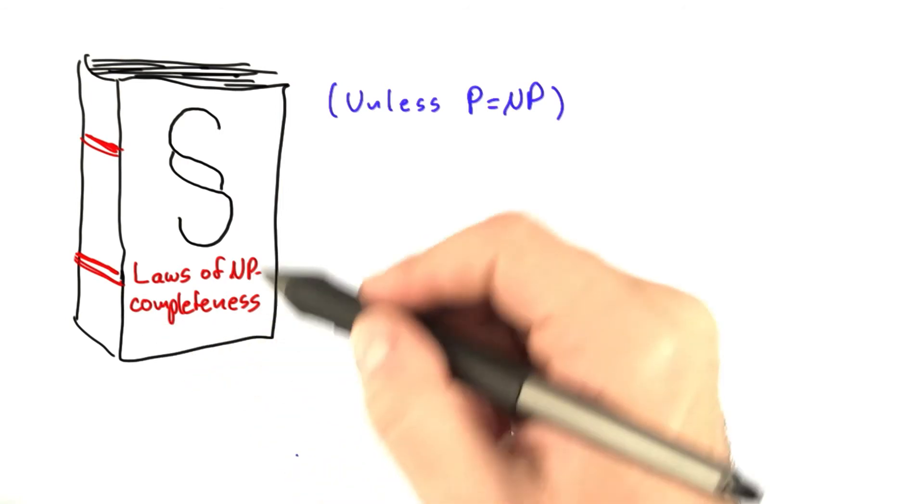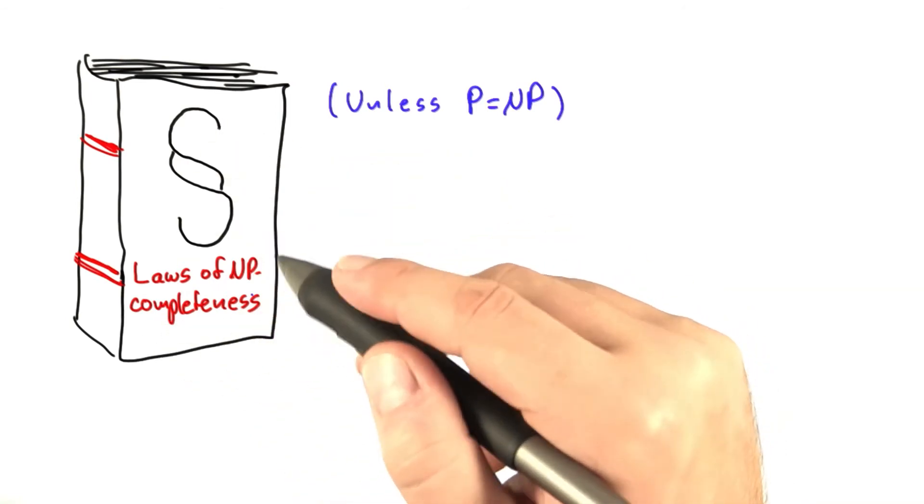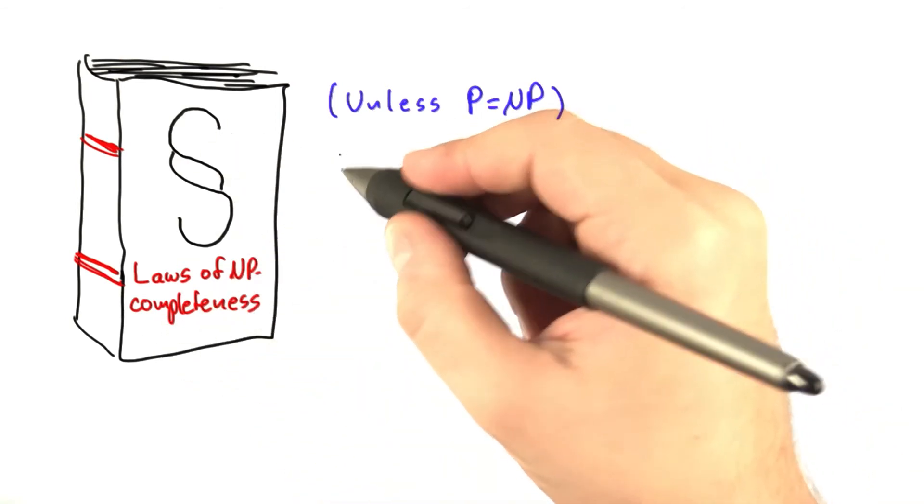If anybody ever proves P equals NP, then we can recycle this book here or delete the e-book. So what do the laws of NP-completeness say?